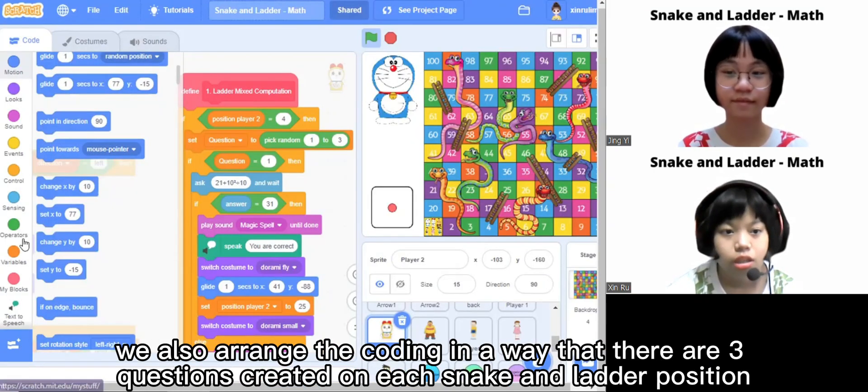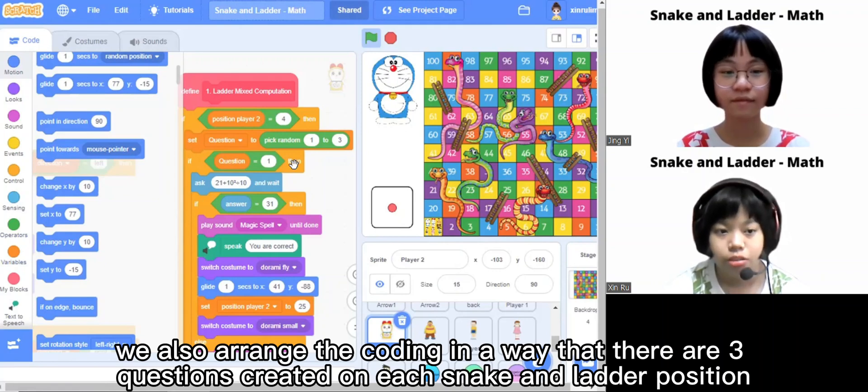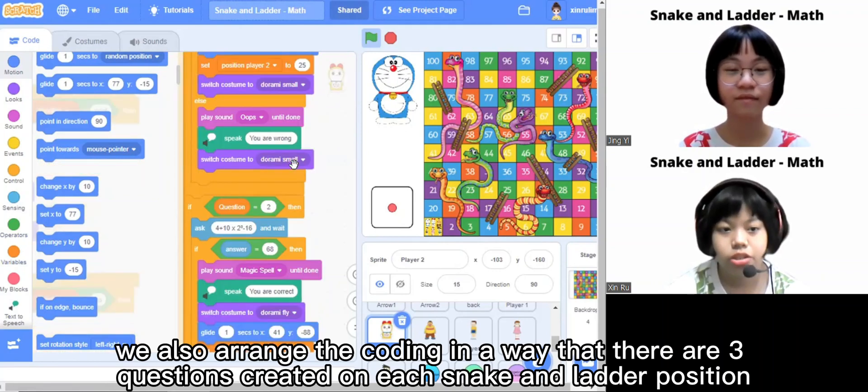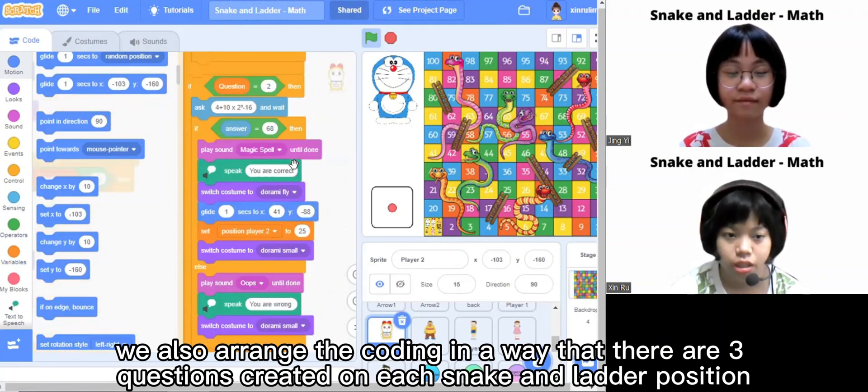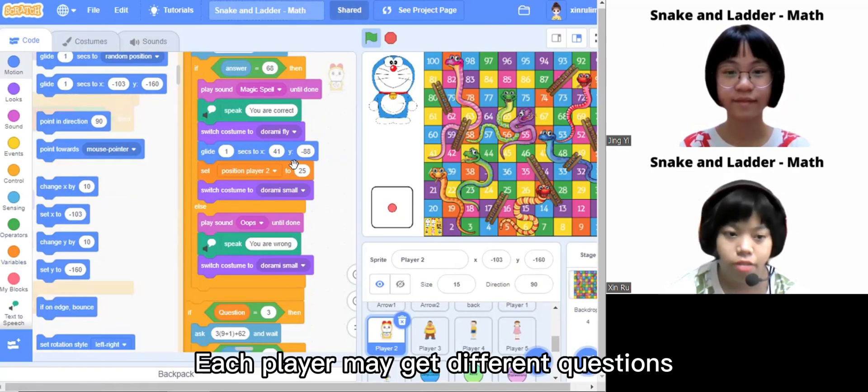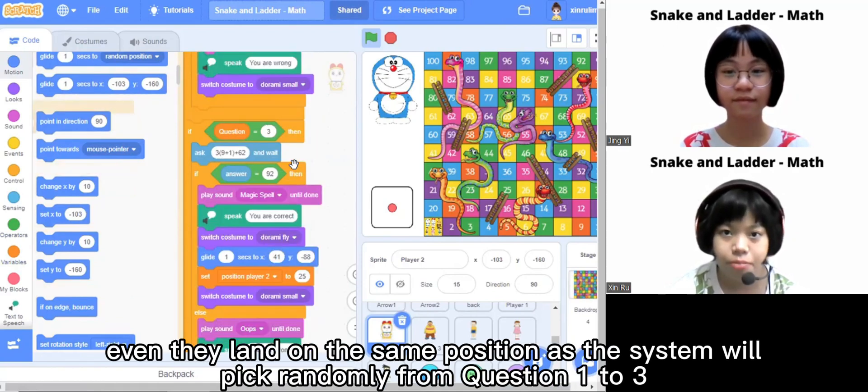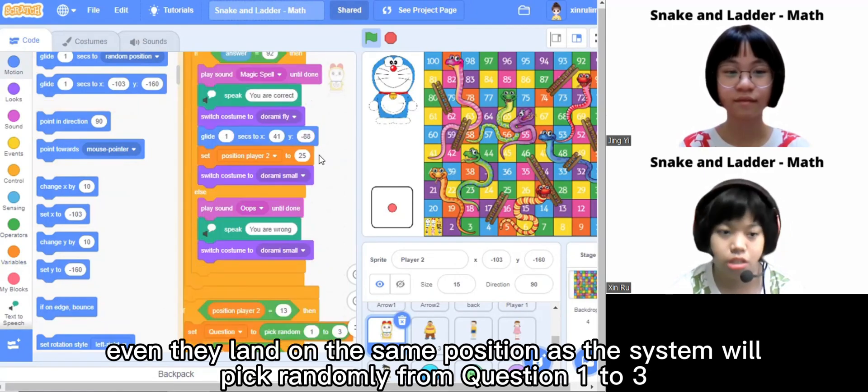we also arrange the code in a way that there are 3 questions created on each snake and ladder position. Each player may get different questions even they land on the same position as the system will pick randomly from question 1 to question 3.